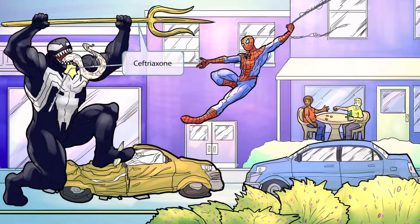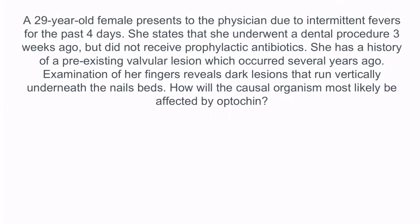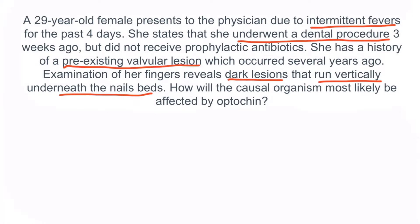Now let's review with a question. A 29-year-old female presents due to intermittent fevers for the past four days. She underwent a dental procedure three weeks ago without prophylactic antibiotics and has a history of a pre-existing valvular lesion. Examination of her fingers reveals dark lesions running vertically underneath the nail beds — this describes splinter hemorrhages. Fevers and splinter hemorrhages are suggestive of bacterial endocarditis, and her history strongly suggests the Viridans group streptococci as the causal organism. These organisms are optochin resistant, so the causal organism will most likely be unaffected by optochin.